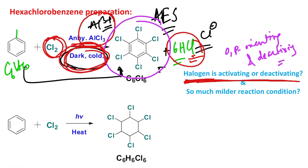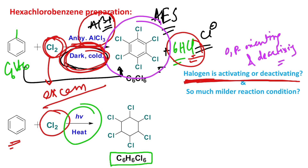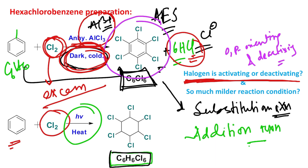Parallel to this, I would request students to remember one more piece of information and not get confused. If you react benzene with excess chlorine in the presence of hν (light irradiation) and heat, you will get hexachlorocyclohexane. So the difference is: the first case gives C₆Cl₆ (substitution product) and the second case gives C₆H₆Cl₆ (addition product). The first is a substitution reaction and the second is an addition reaction — please do not get confused.